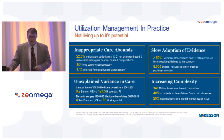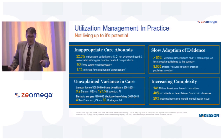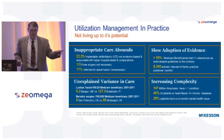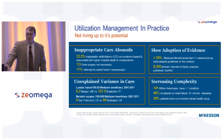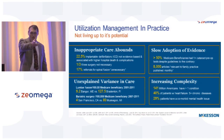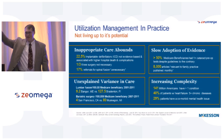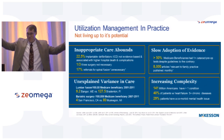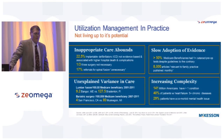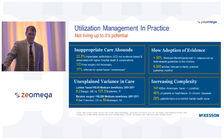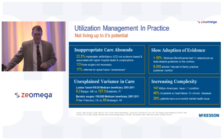We have these unexplained variances in care. The difference between Florida and Maine — look at that number: 9.2 versus 127. We saw the outliers: who's in the red, who's in the green, and somewhere in the middle lies the truth. And from bariatric surgery: four in San Francisco, 80 in Michigan. Something's happening in this physician process.